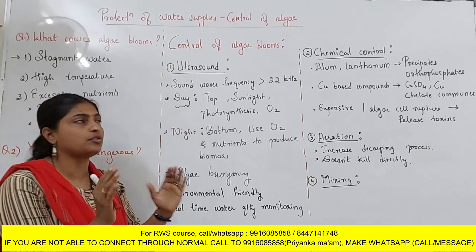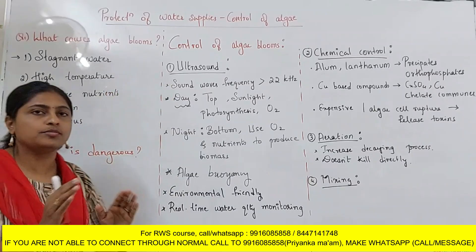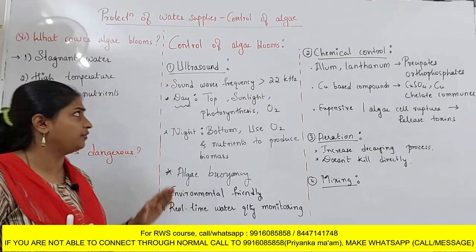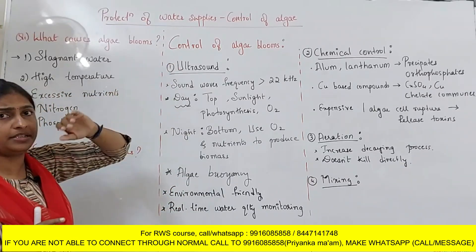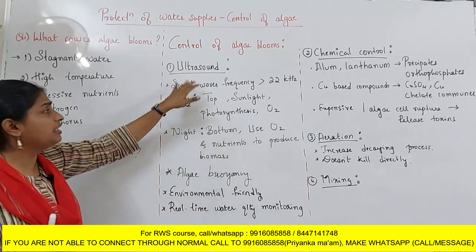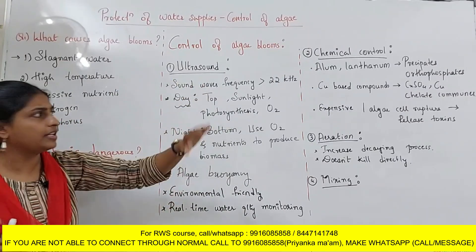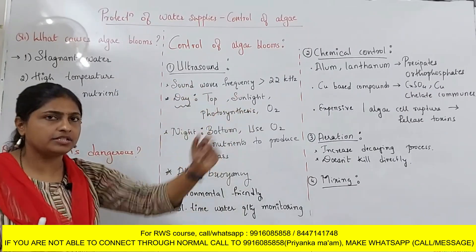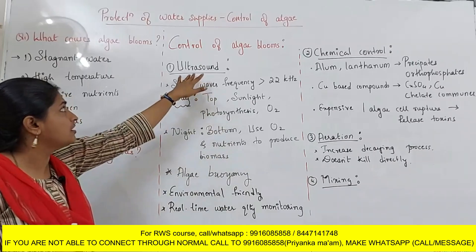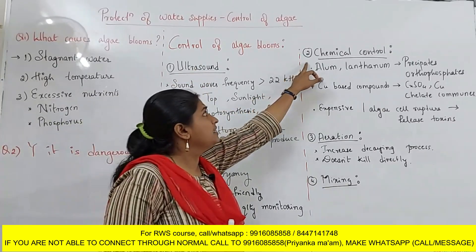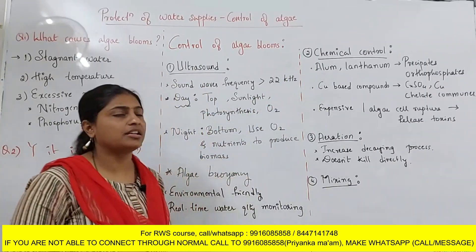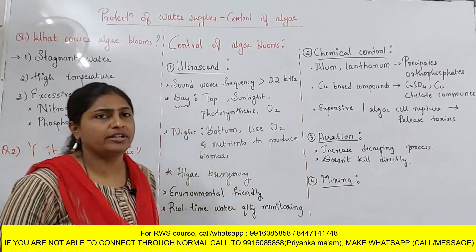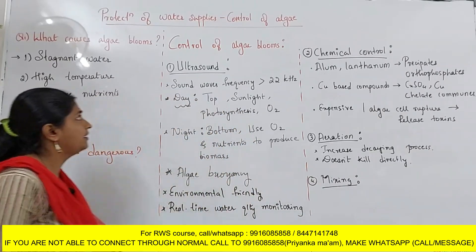What you have to understand is that these algae blooms are dangerous. There are four methods which are mostly used. The first one is the ultrasound method. The second one is the chemical control method. The third one is the aeration method. The fourth one is the mixing method.